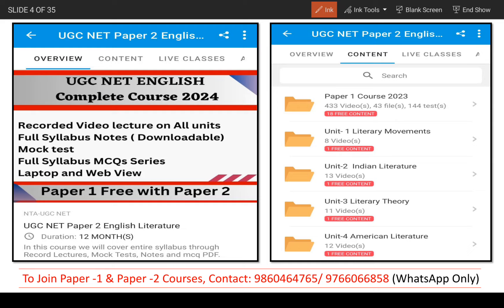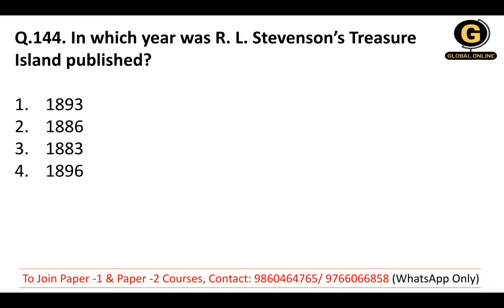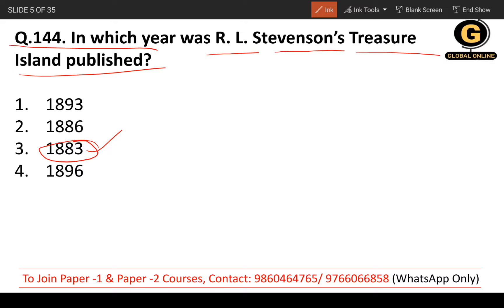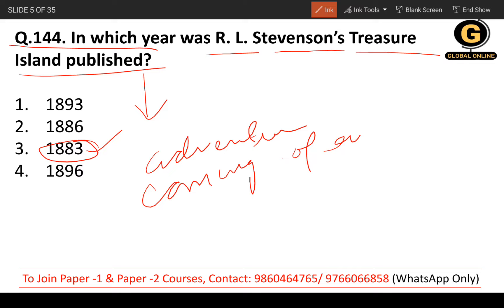Now let's talk about the questions. Question number 144: in which year was R.L. Stevenson's Treasure Island published? We have already discussed this many times. It was published in 1883. The correct answer is 1883. It is an adventurous novel and a coming-of-age novel, written by Robert Louis Stevenson.